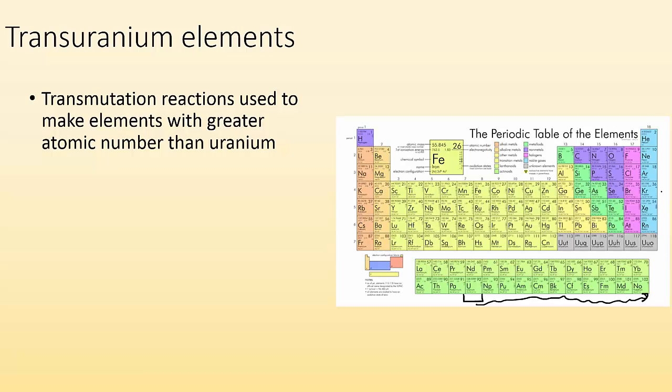We use transmutations to create them. Many of these elements have a very, very short half-life, which means that they won't exist for very long, which is why we have to make them. They're so unstable that they break down almost instantly. So if we want to have them, we got to make them.